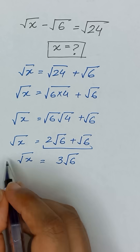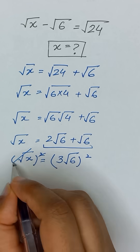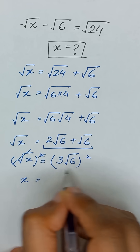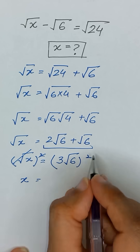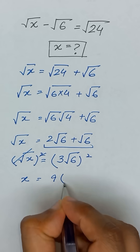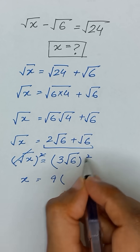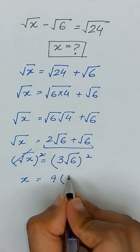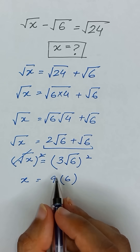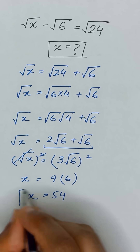To remove the square root, we will apply a square on both sides so it will cancel out. The square applied on 3 gives 9, and the square applied on square root of 6 cancels the square root, leaving 9 times 6, which equals 54. So x equals 54. Thanks for watching.